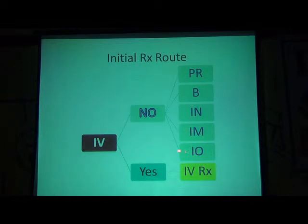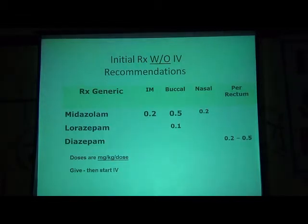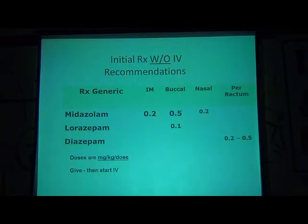Non-IV dosing for status epilepticus: Midazolam — IM 0.2 mg/kg, buccal 0.5 mg/kg, nasal 0.2 mg/kg. Lorazepam — buccal 0.1 mg/kg. Diazepam — rectal 0.2 to 0.5 mg/kg. This chart should be available in all hospitals providing level 3 or level 4 care.